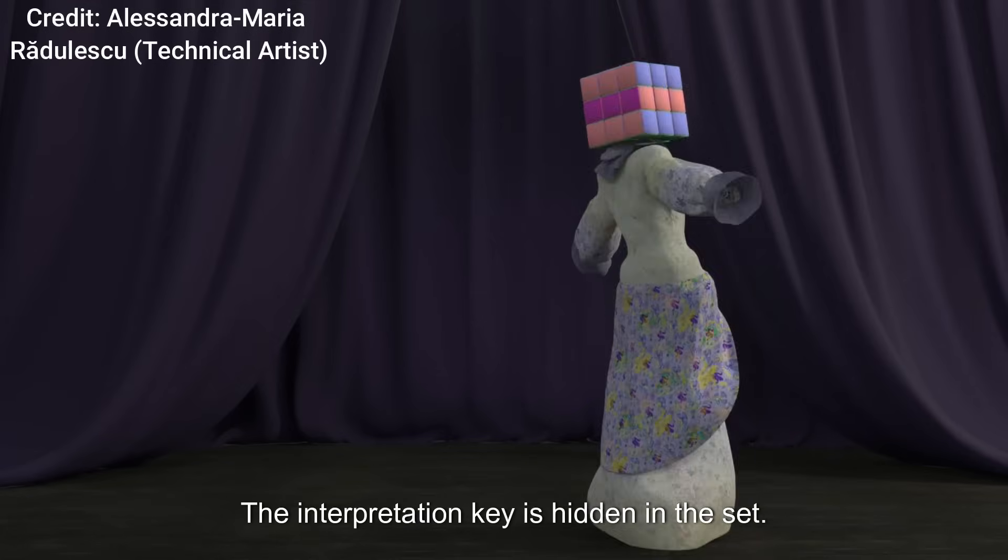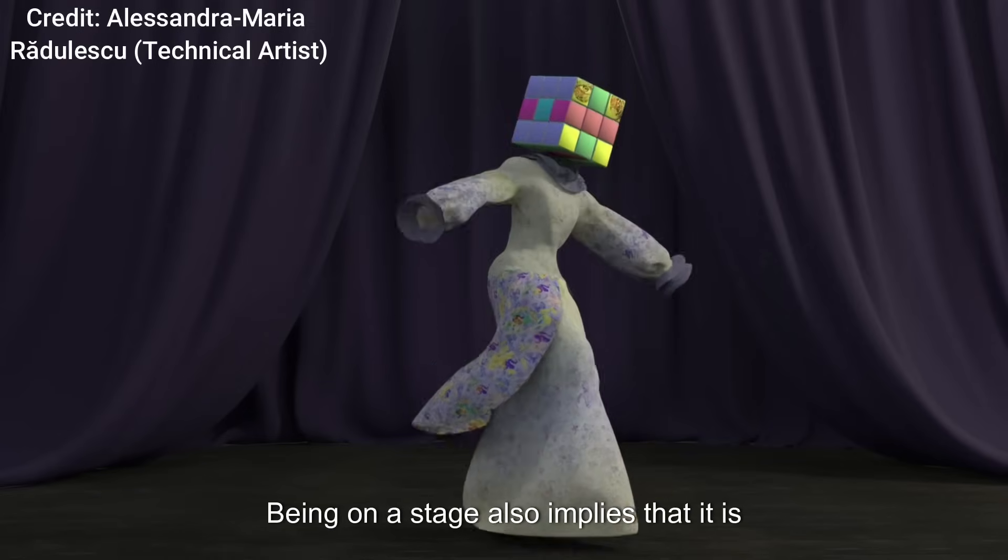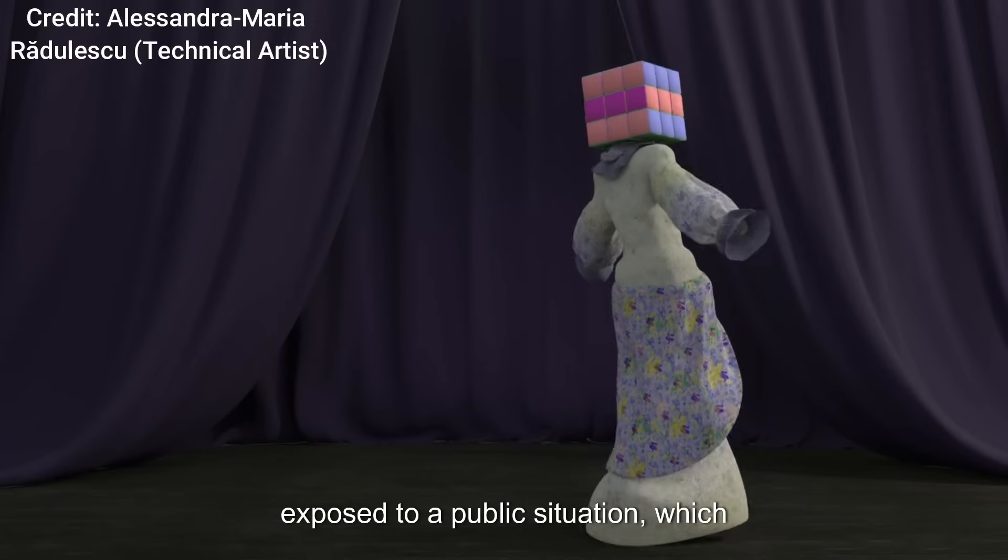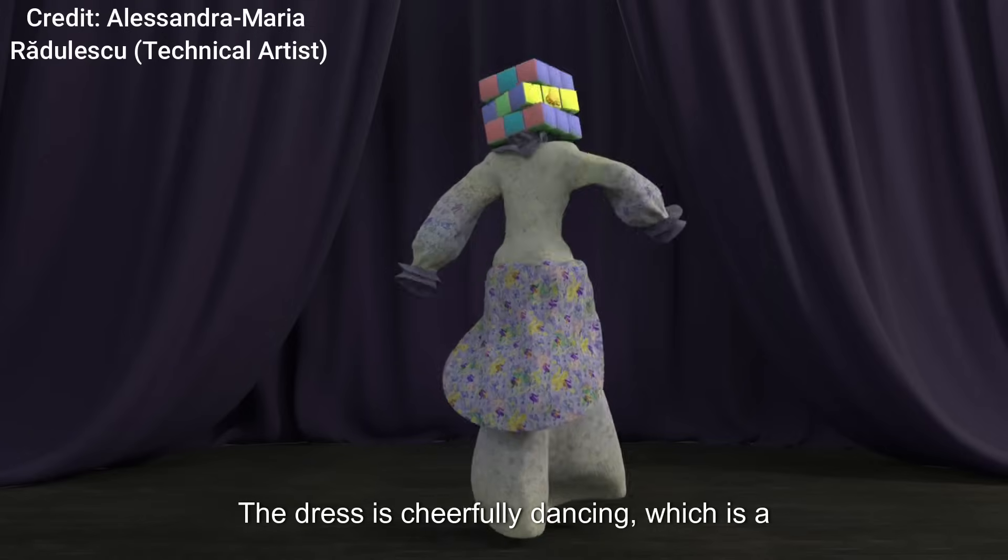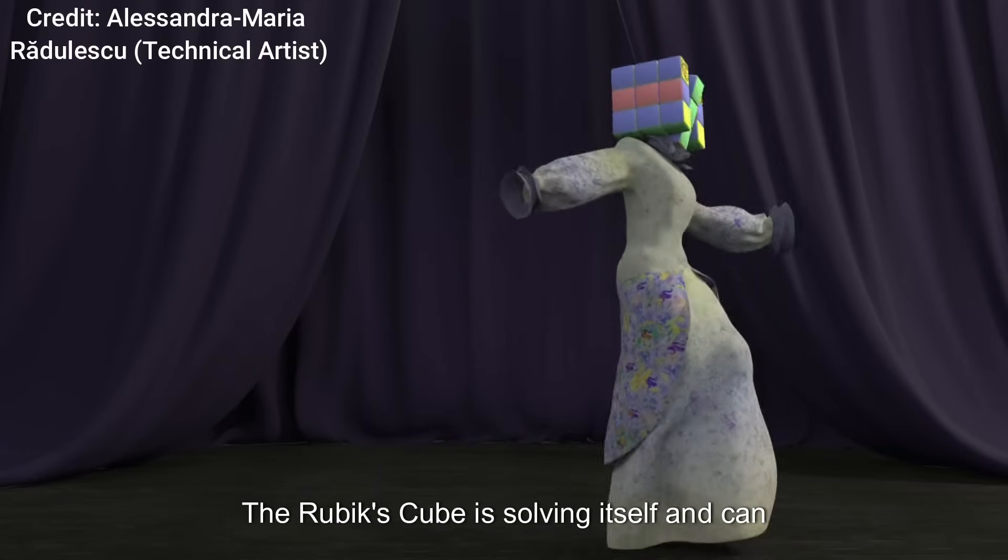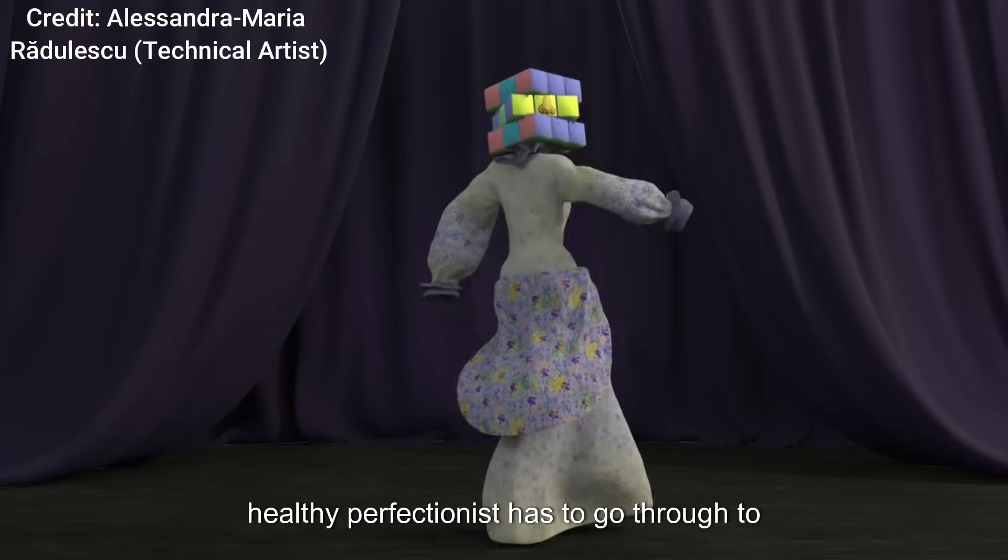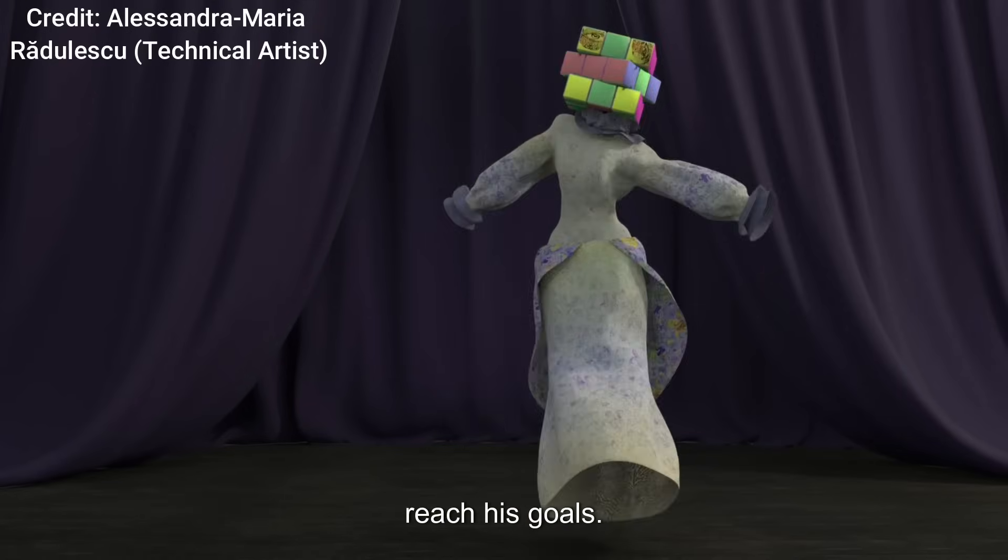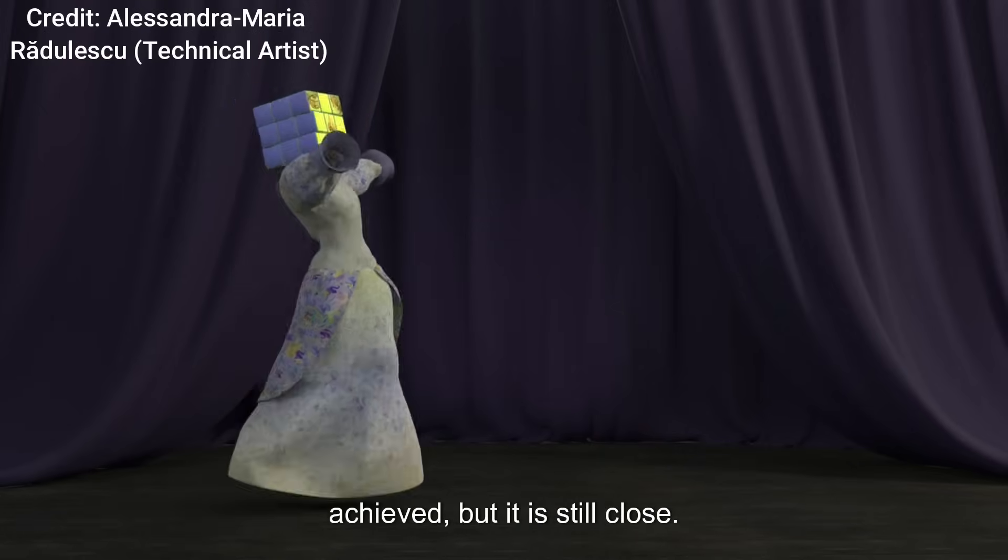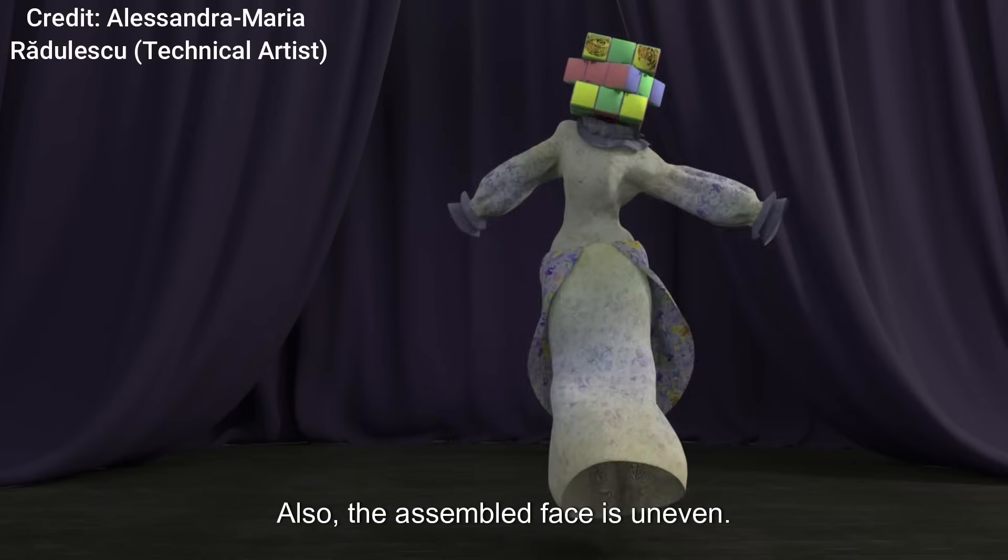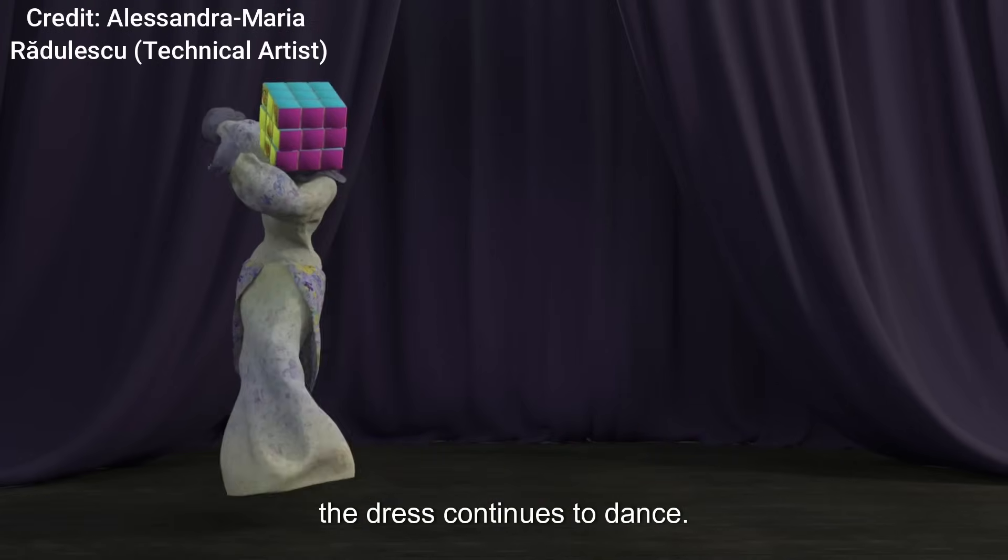The second scene is a visual metaphor of how adaptive perfectionism works. The interpretation key is hidden in the set. The subject is placed in the center of the shot, in the spotlights. Being on a stage implies that it is exposed to a public situation which requires letting go of fears. The dress is cheerfully dancing which is a sign of optimism. The Rubik's Cube is solving itself and can be translated as the entire process a healthy perfectionist has to go through to reach his goals. There should be a small offset when the cube gets finally solved. It means that perfection has not been achieved but it is still close. As the individual embraces the imperfection, the dress continues to dance.